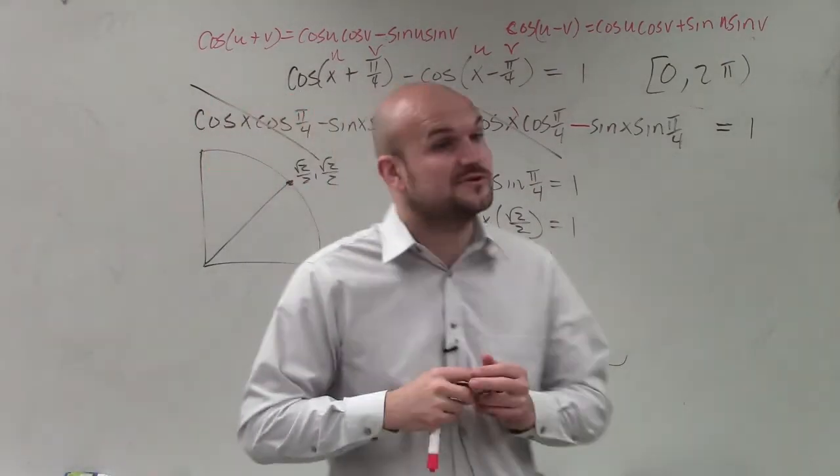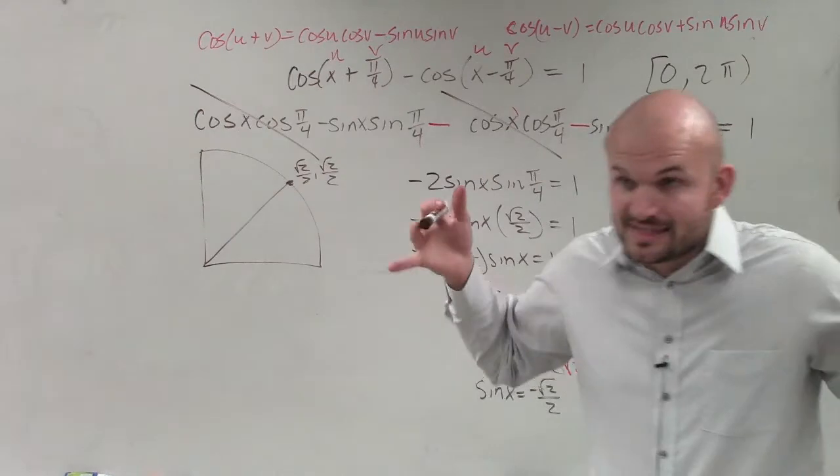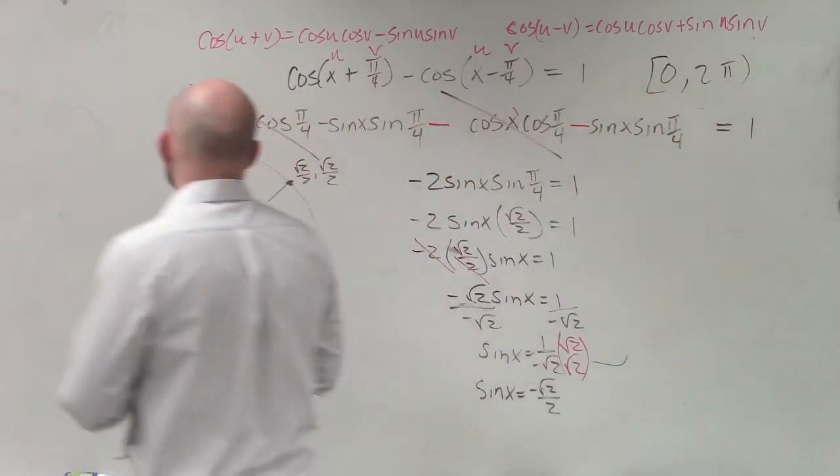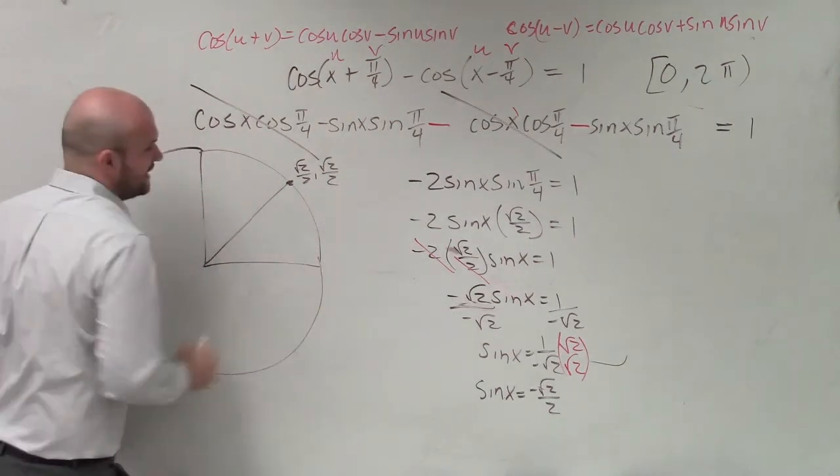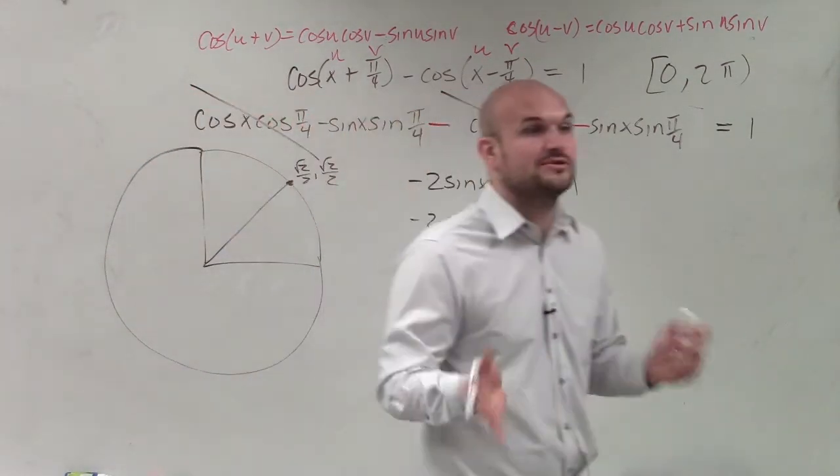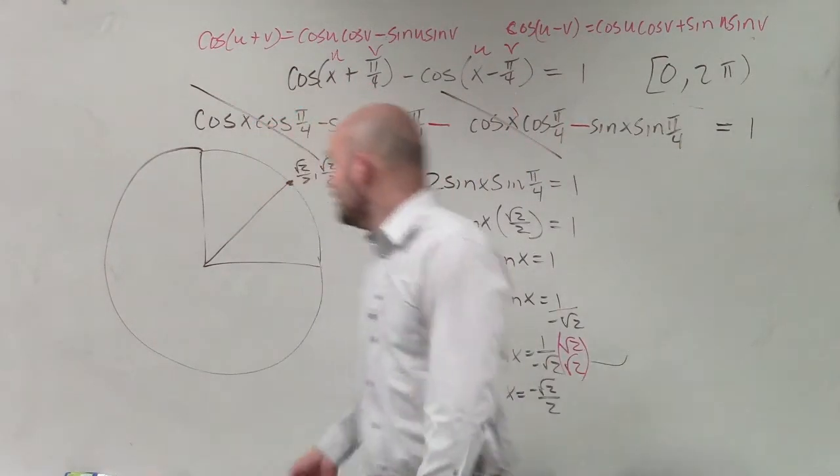But again, we're trying to find the values of x, right? So we need to isolate the x. So therefore, we need to determine, well, what are all the values when sine of x equals negative square root of 2 over 2 in our constraint of 0 and 2 pi?